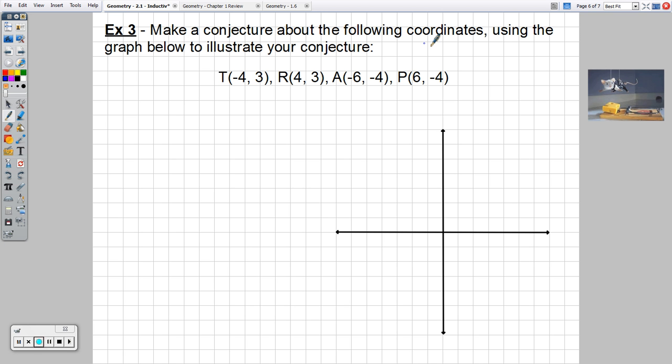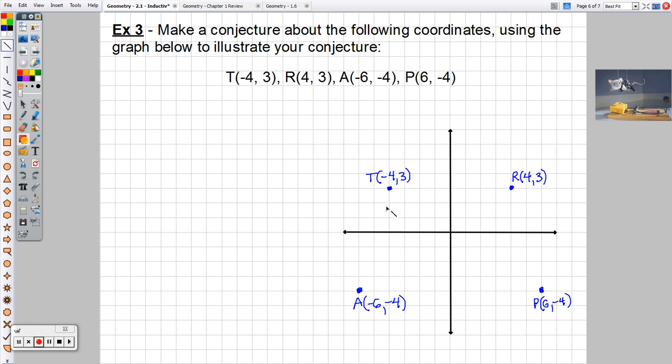Make a conjecture, number three. Make a conjecture about the following coordinates using the graph below to illustrate your conjecture. We've got T at negative 4, 3, that's where t is at. R is at 4, 3, that's going to be over here, right 4, up 3. And then A is at negative 6, negative 4, over to the left 6, down 4. And then finally P is at 6, negative 4. So we go right 6 and down 4.